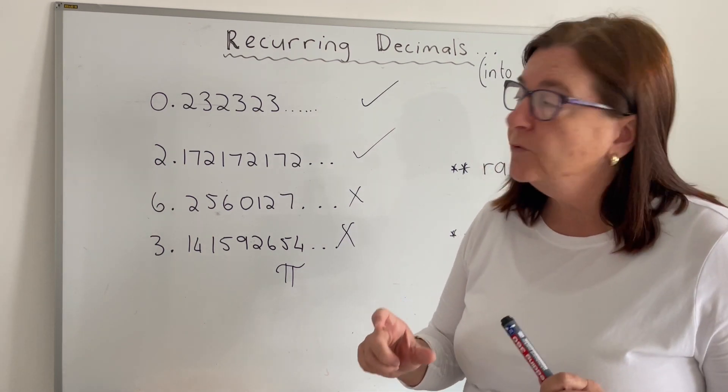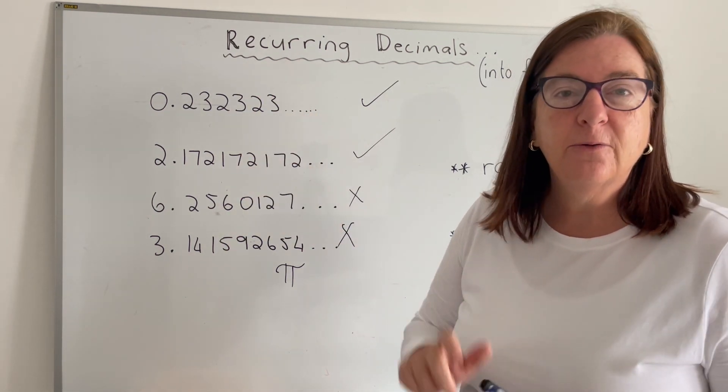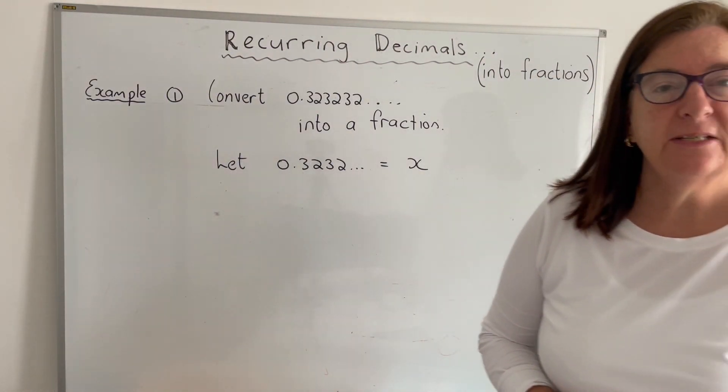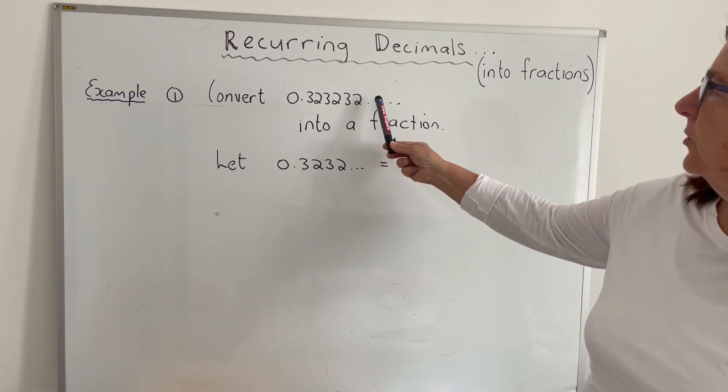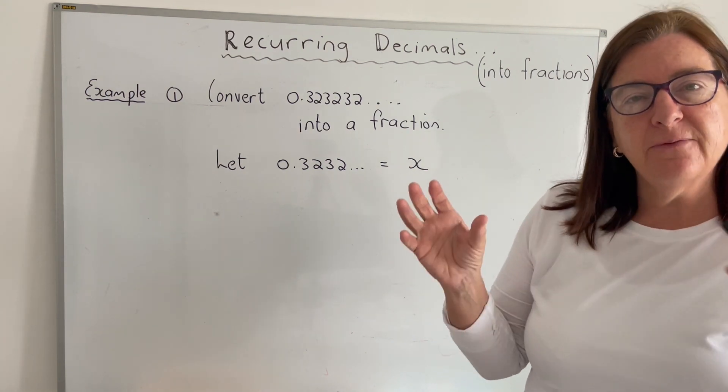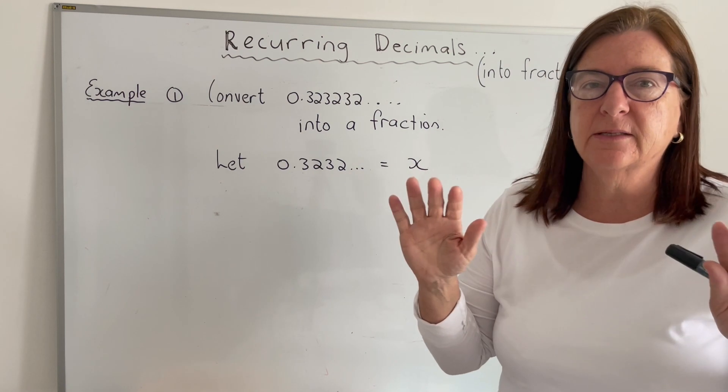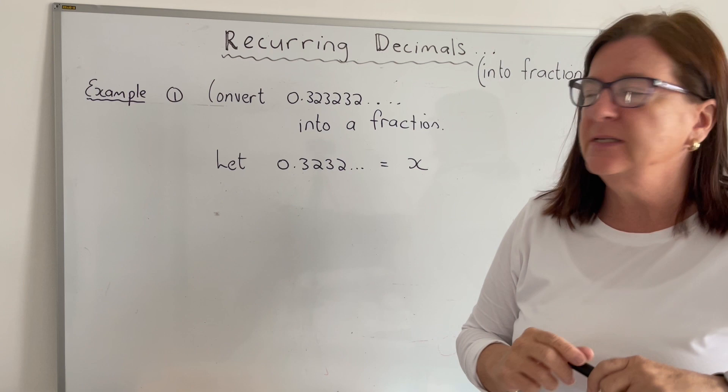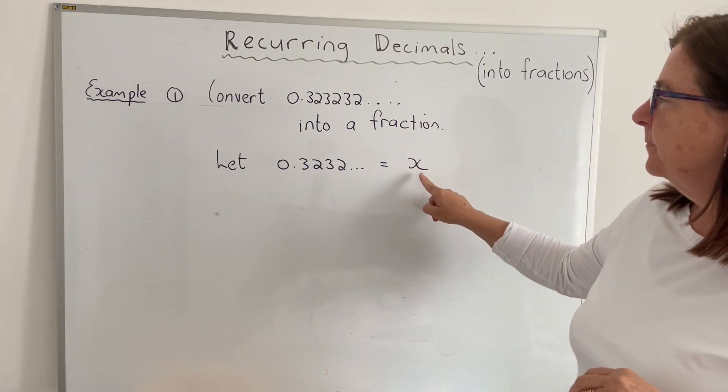Now let's look at the trick as to how to convert each of these recurring decimals into fractions. Let's look at our first example. We want to convert 0.323232, which is a recurring decimal, into a fraction. The first thing that we always do is whatever the recurring decimal is, we let that equal x, always irrespective of the amount of digits that are recurring.